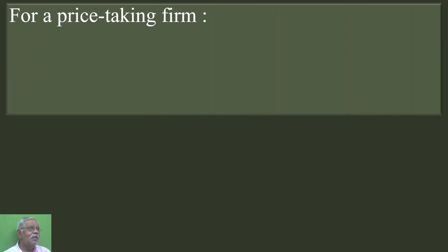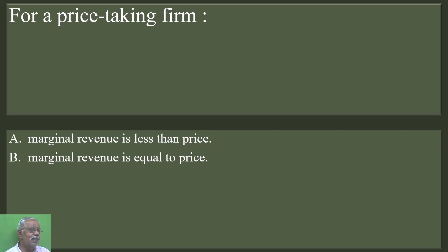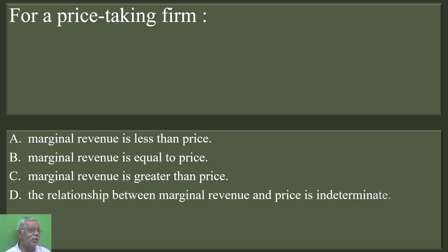For a price-taking firm: marginal revenue is less than price; marginal revenue is equal to price; marginal revenue is greater than price; or the relationship between marginal revenue and price is indeterminate. Option B is correct — marginal revenue is equal to price.